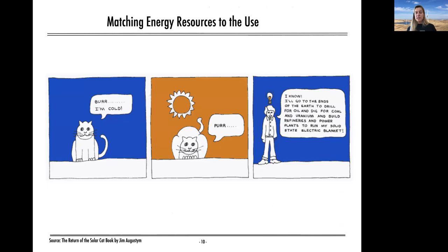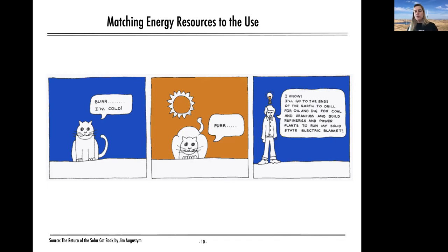Another thing to think about is matching your energy resources to the use. This is illustrated by a cartoon from the book 'The Return of the Solar Cat': a cat is cold, sits in the sunshine, and purrs — it's warm. The human is cold and says 'I know, I'll go to the ends of the earth and dig for oil and coal and uranium and build refineries and power plants to power my solid-state blanket.' The point is: use low-quality heat for services that only need low-quality heat, and save high-quality energy for uses that really need it.